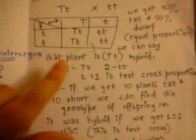When we cross the offspring with this pure recessive parent, our results were here. We got 50% tall and 50% dwarf plants in equal proportion. From this we can say that the plant is capital T small T hybrid. We got two tall plants and two dwarf plants.